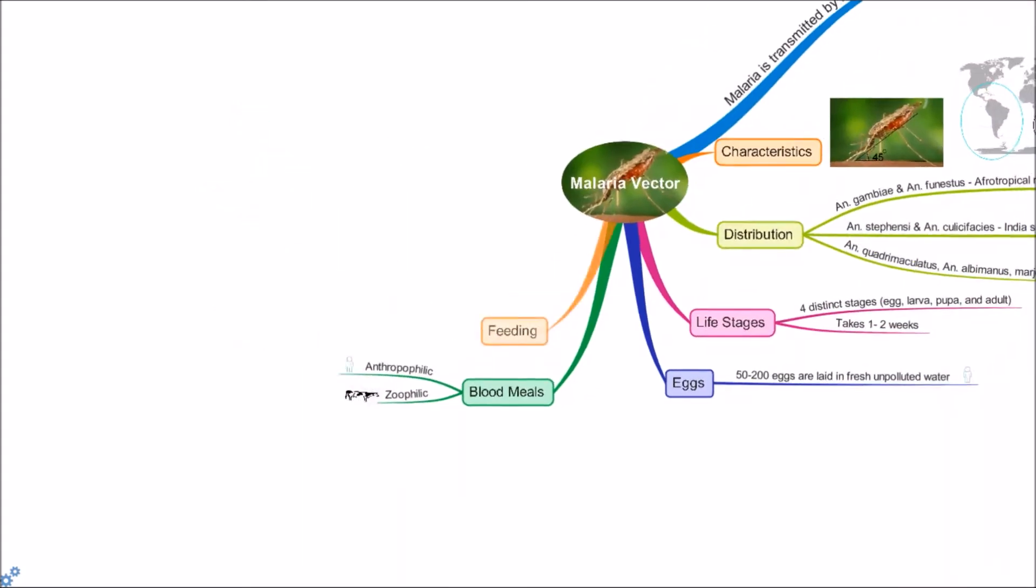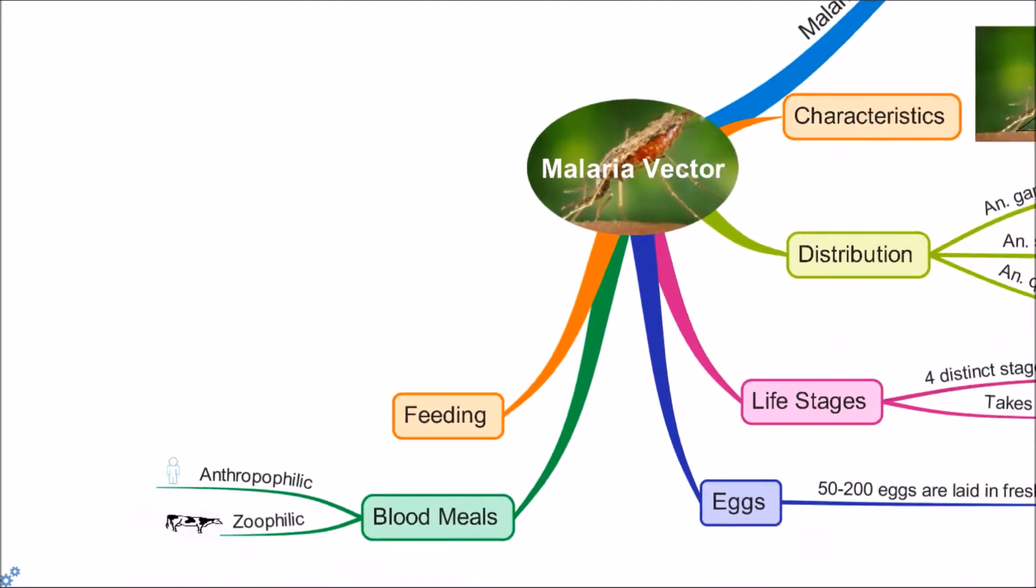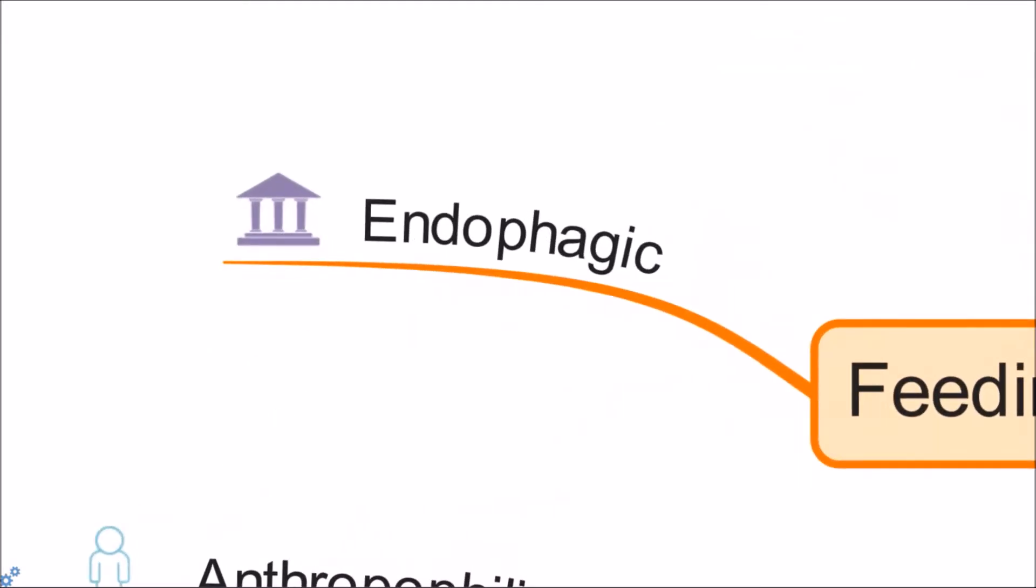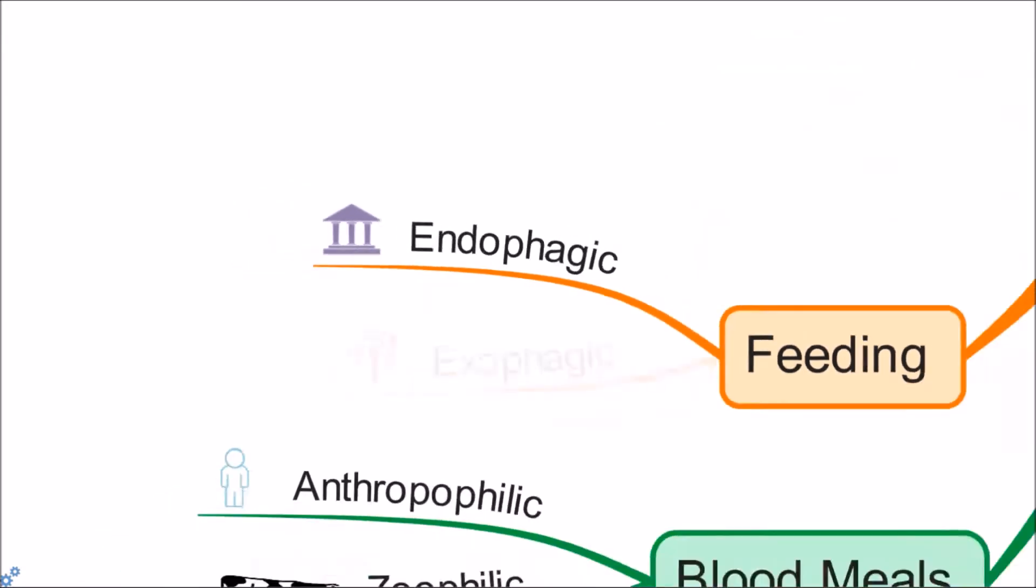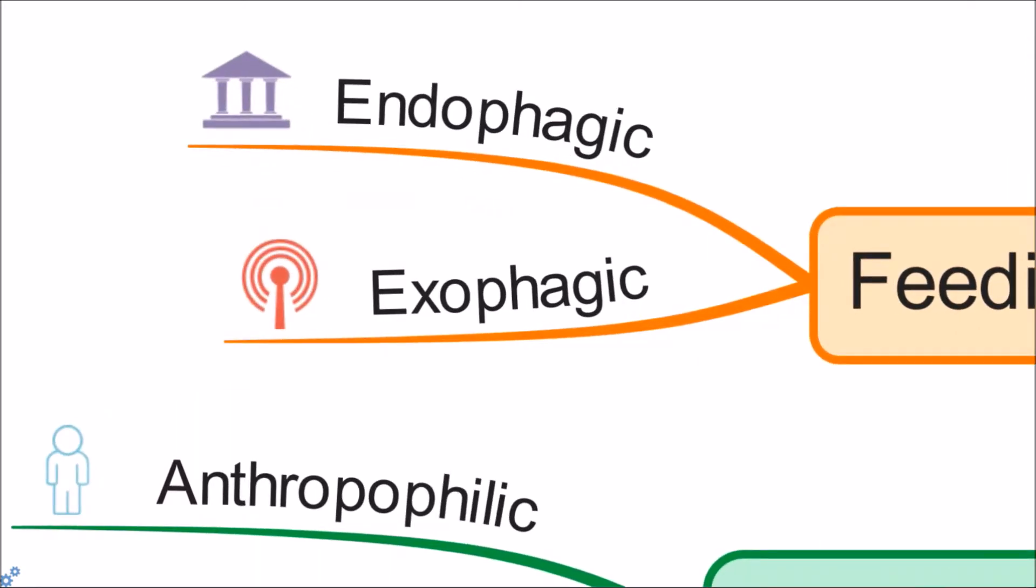Another behavior in feeding: some Anopheles mosquitoes feed indoors, called endophilic, while others feed outdoors, called exophilic.